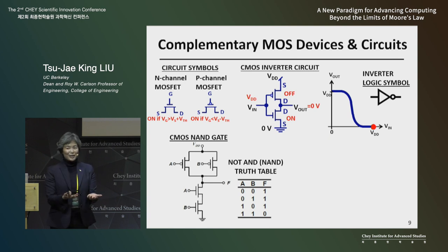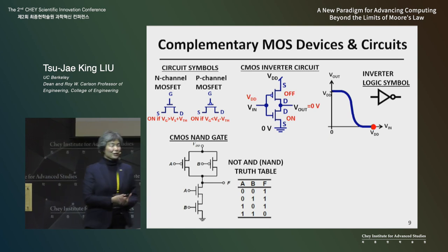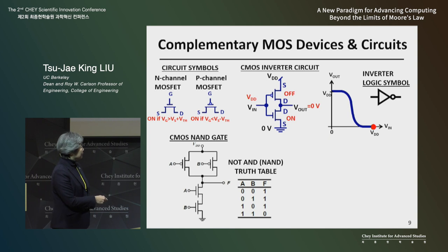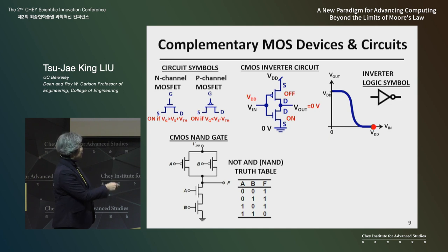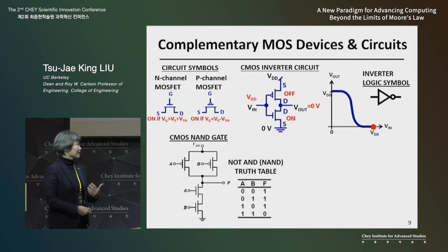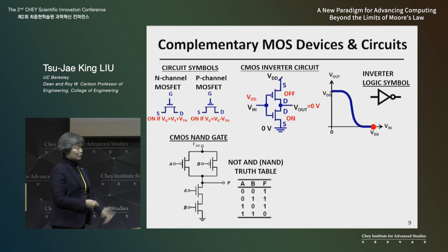A complicated computer chip has much more complex functions. This is an example showing a NAND gate — not AND. Only if the two inputs are both high — high voltage applied to A and B — so the N-channel device is turned on, will the output go down to ground. Otherwise, if either A or B is low, one or more of the P-channel transistors is on, connecting the output to high voltage. High voltage represents a one, and low voltage represents zero.